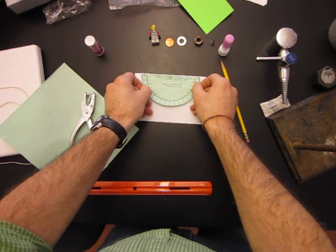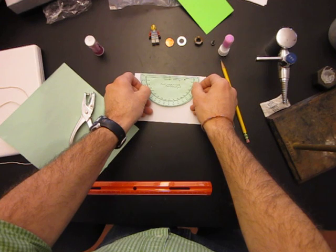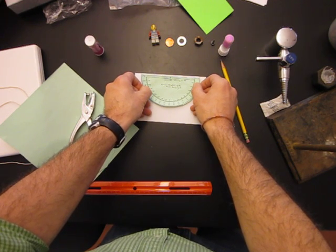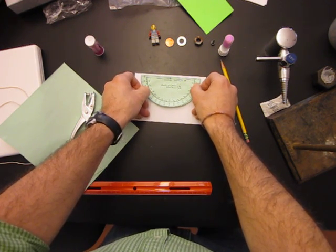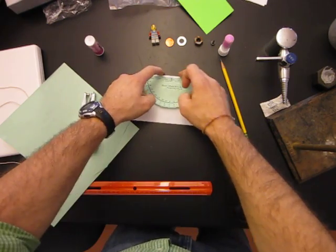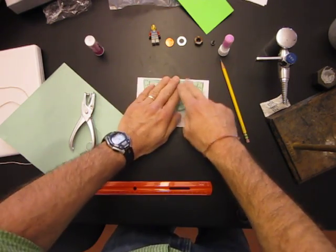Then, line it up as best you can, the flat edge with the top edge of the paper. There can be a gap, but try and make sure that this line is parallel to that line. Flatten it out.